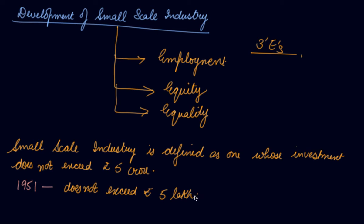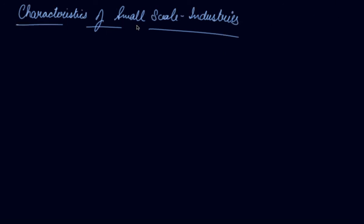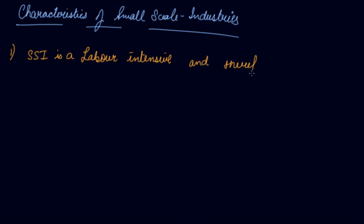Only rupees five lakh were required to establish a small-scale industry. Now, the first characteristic of small-scale industries is that they are labor intensive. Large-scale industries are capital intensive — they use large machinery for production — whereas small-scale industries employ more labor to carry out production. This gives employment to the poor section of society and helps in generating employment in the economy.